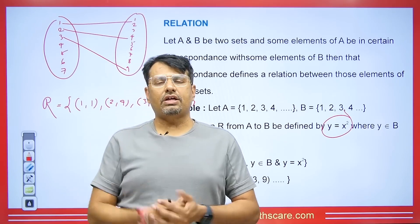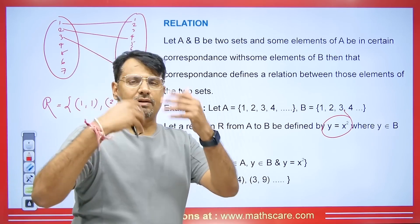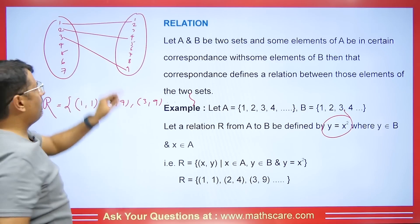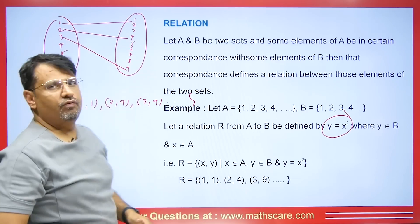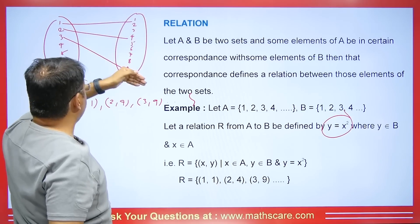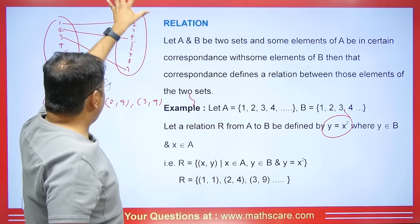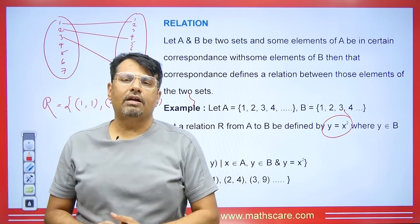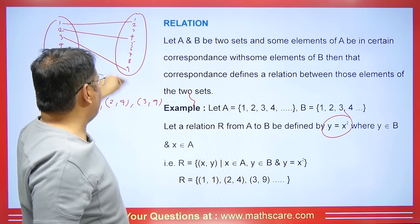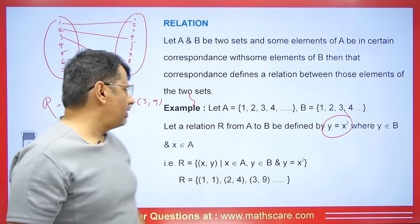Also, how do we check the domain and the range? The elements on the input side are called the domain. The elements that are connected to them are called the range. So the range here will be 1, 4, 9, 16, 25, 36. All the elements of the output set are the co-domain, and those actually connected to domain elements form the range set.